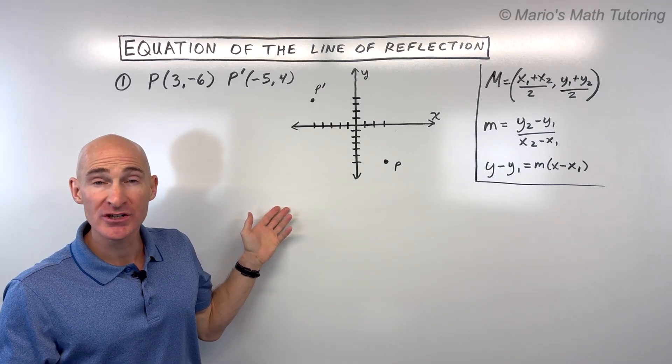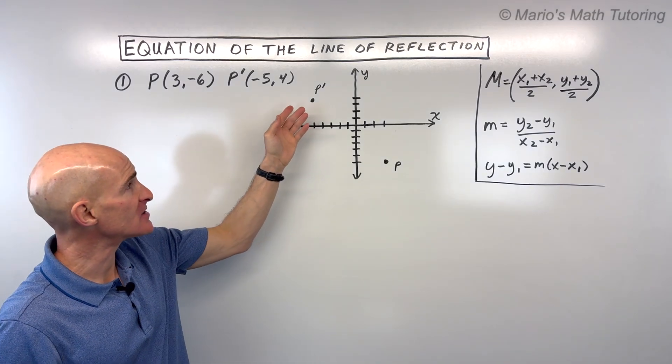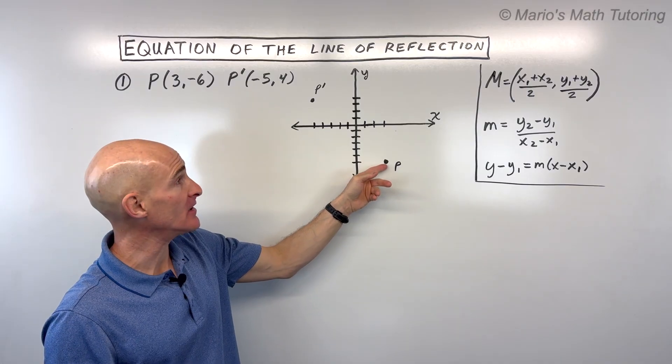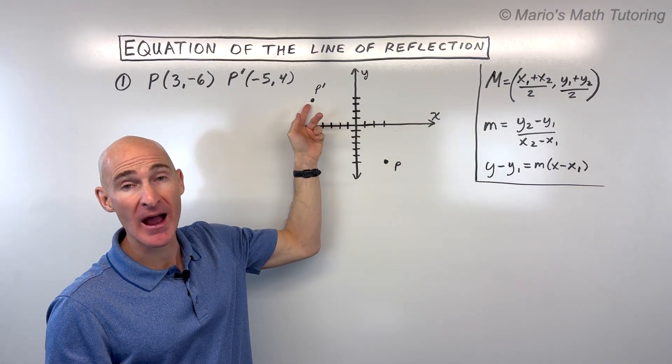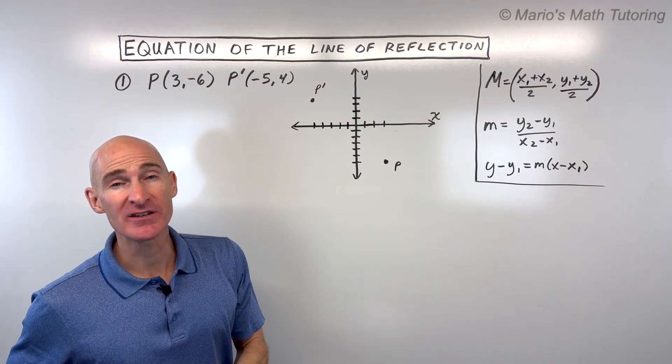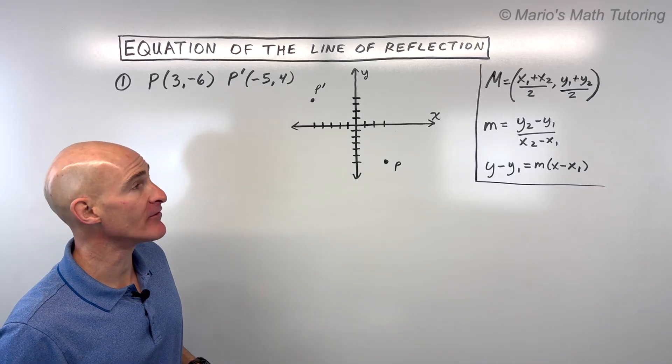So how do we find the equation of the line of reflection that takes us from the pre-image P to the image P'? That's what we're going to talk about in this video. We're going to go through two examples together. Let's dive in.